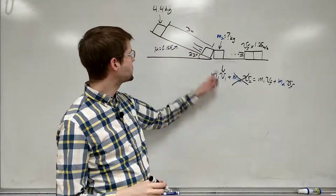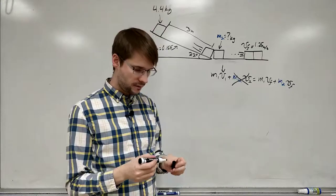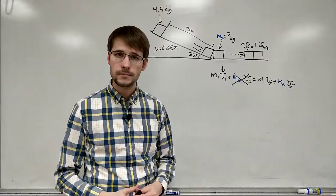So we need to figure out what is the velocity of this block right here, right before it collides into the other block. If we can find that, then we're golden. All we have to do is plug it into this equation and we're done.